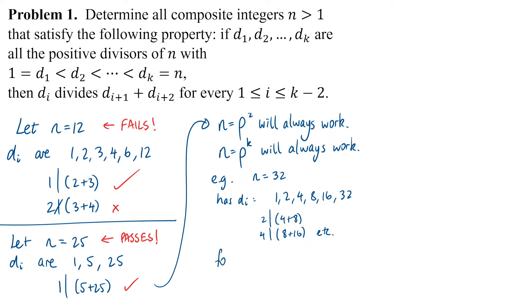In general if we have 1, p, p², etc., up to pⁿ, each divisor will divide all larger divisors, so of course it will divide the sum of the next 2. We've proven that if n is any power of any prime, then it will satisfy this condition.